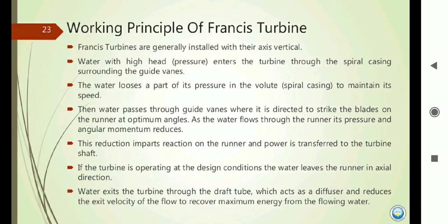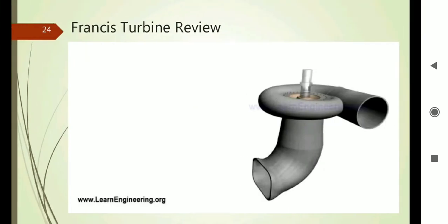Regarding the working of the Francis Turbine: it is generally installed with a vertical shaft and water pressure enters the turbine through the spiral casing. Water loses part of its pressure in the volute. At the entry of the turbine the pressure is maximum and at the exit it is minimum. After passing through the guide vanes, water is directed to the blades of the runner at the optimal angle. As water flows through the runner, its pressure and angular momentum reduce. This reduction causes the reaction of the runner, and power is transmitted to the turbine shaft. Water leaves the turbine in the axial direction.